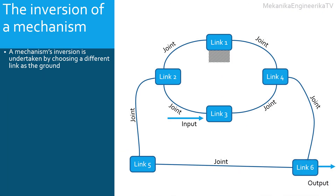A mechanism is constituted of elements called links. The links are connected together through kinematic pairs or joints. In a mechanism, one link is considered as the ground or reference. The inversion of a mechanism is carried out by choosing a different ground, by moving the ground from one link to another.